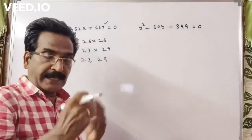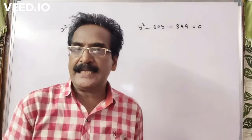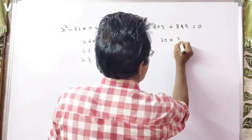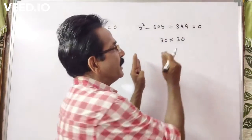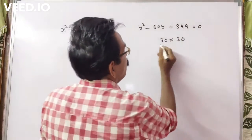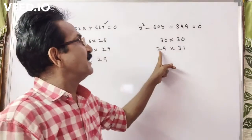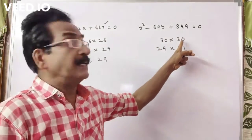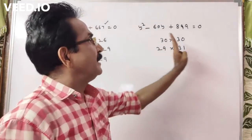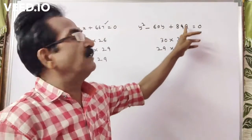Now for 899: the next immediate highest perfect square after 899 is 900, which is 30 squared. So 30 into 30 is 900. You need to reduce 30 and increase 30 to get a product of 899 and sum of 60. So 29 into 31 equals 899, and 29 plus 31 equals 60.